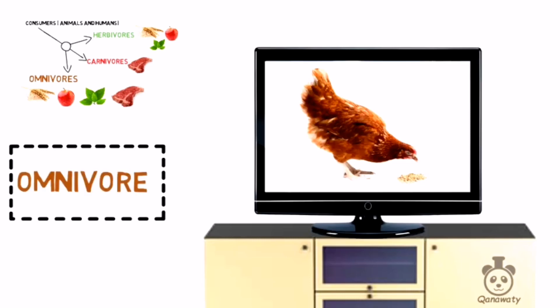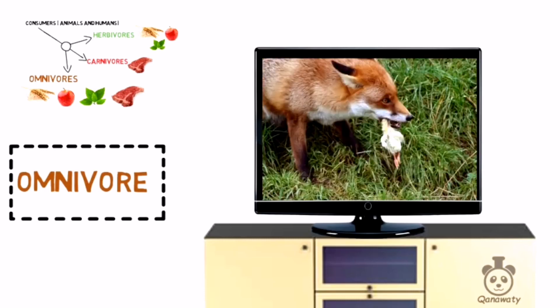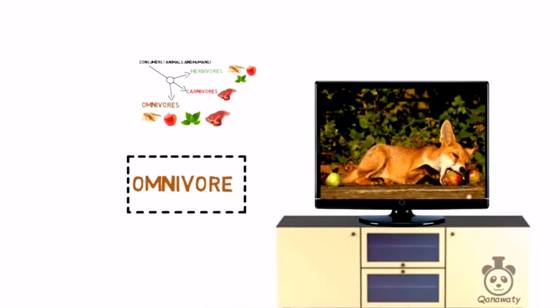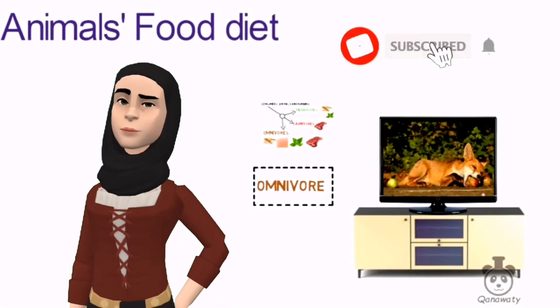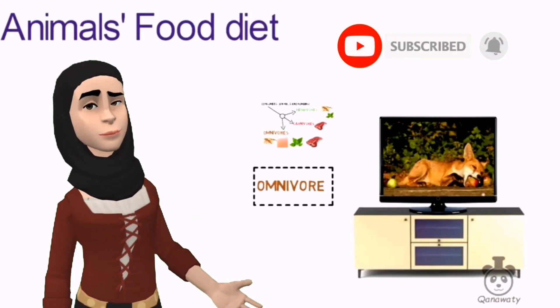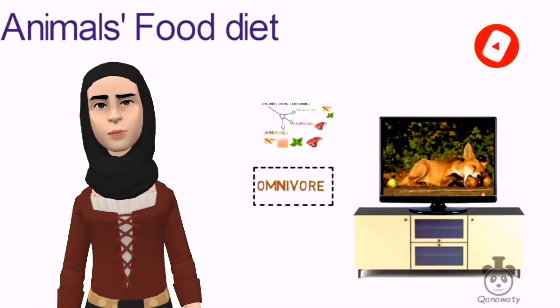This hen can eat both animals and plants, so the hen is an omnivore. The fox is also an omnivore because it eats both animals and plants. And now let me ask you — are you considered a herbivore, a carnivore, or an omnivore?